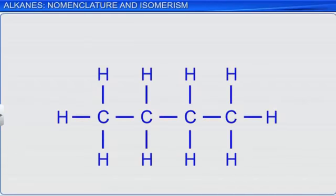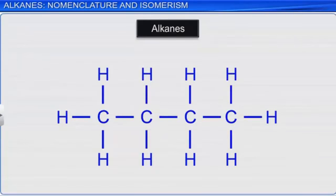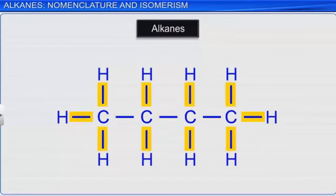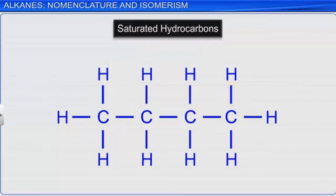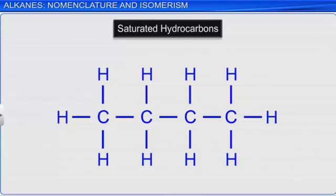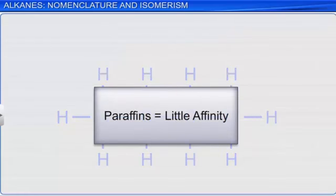As we learned, alkanes are the simplest form of hydrocarbons containing carbon-carbon single bonds. Their molecules consist of carbon-hydrogen bonds and carbon-carbon single bonds. Since each carbon is bonded to four other atoms through single covalent bonds, the compounds are called saturated compounds. They contain strong sigma bonds, and due to this, the compounds are almost chemically non-reactive at normal temperature and pressure. This is why they were earlier known as paraffin, which in Latin means 'little affinity.'